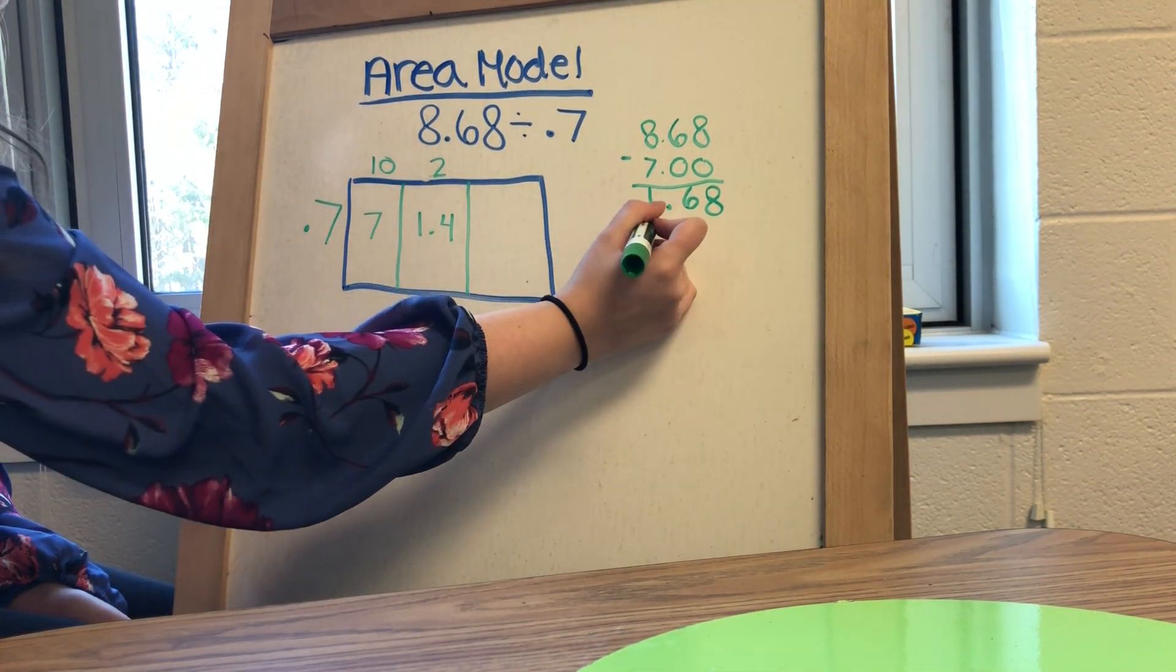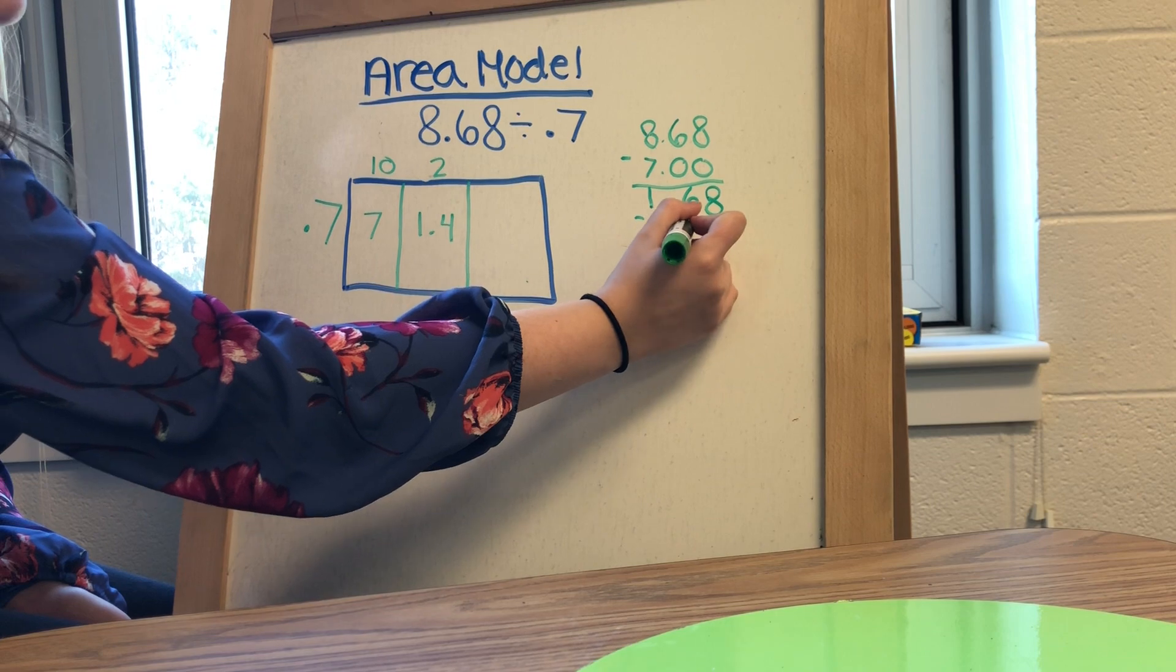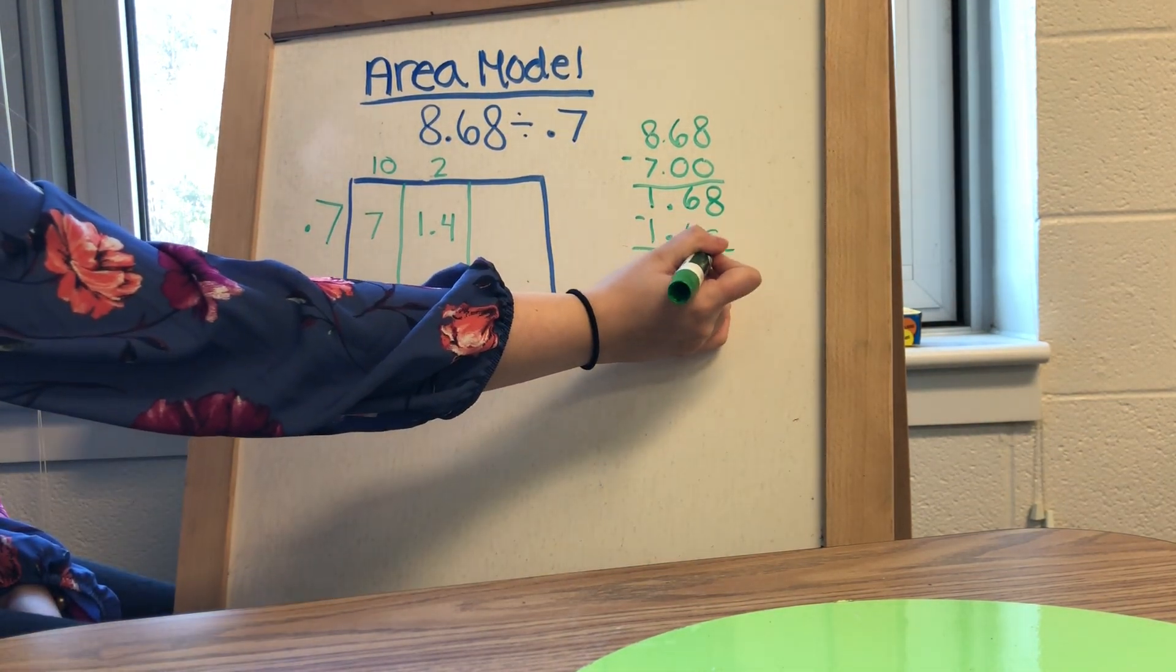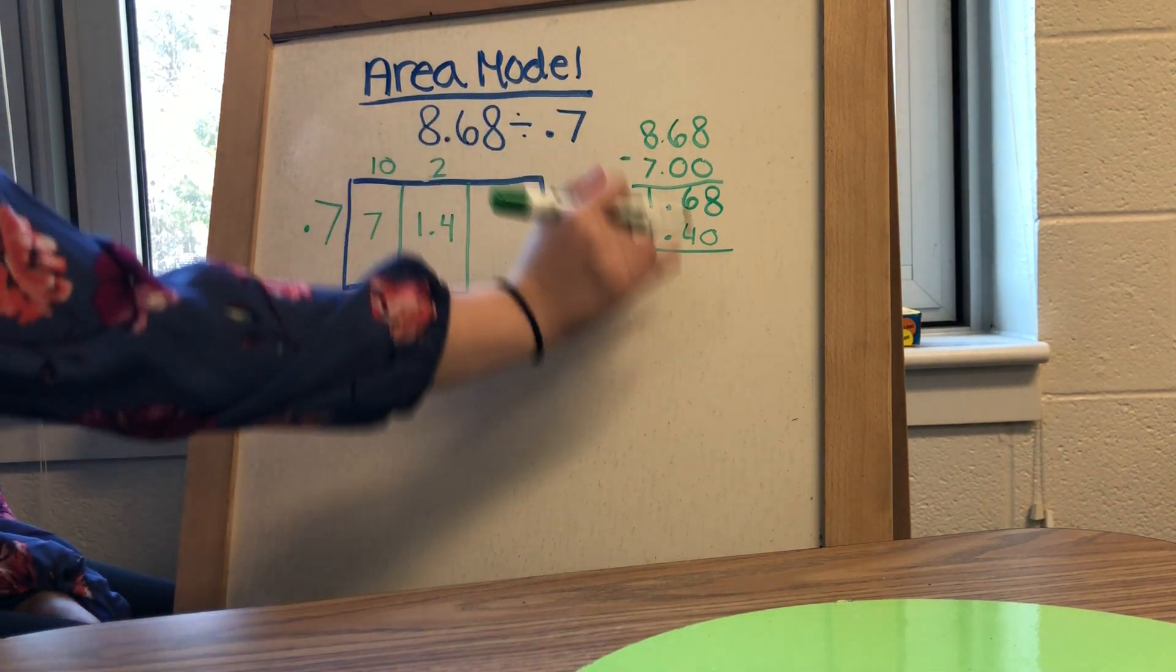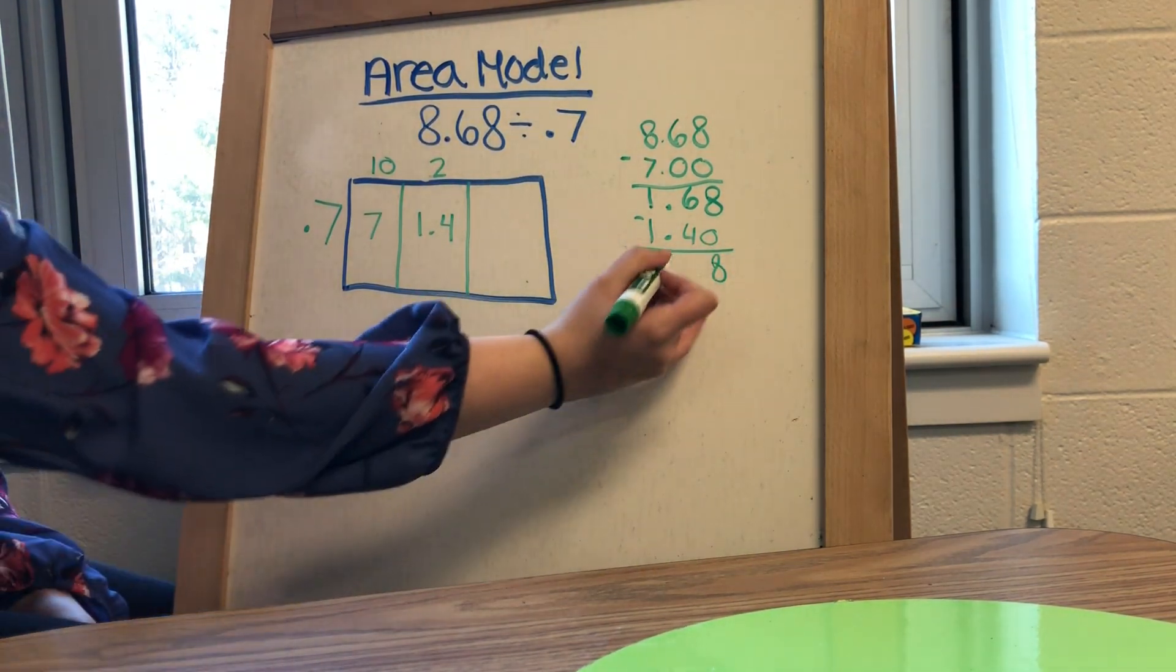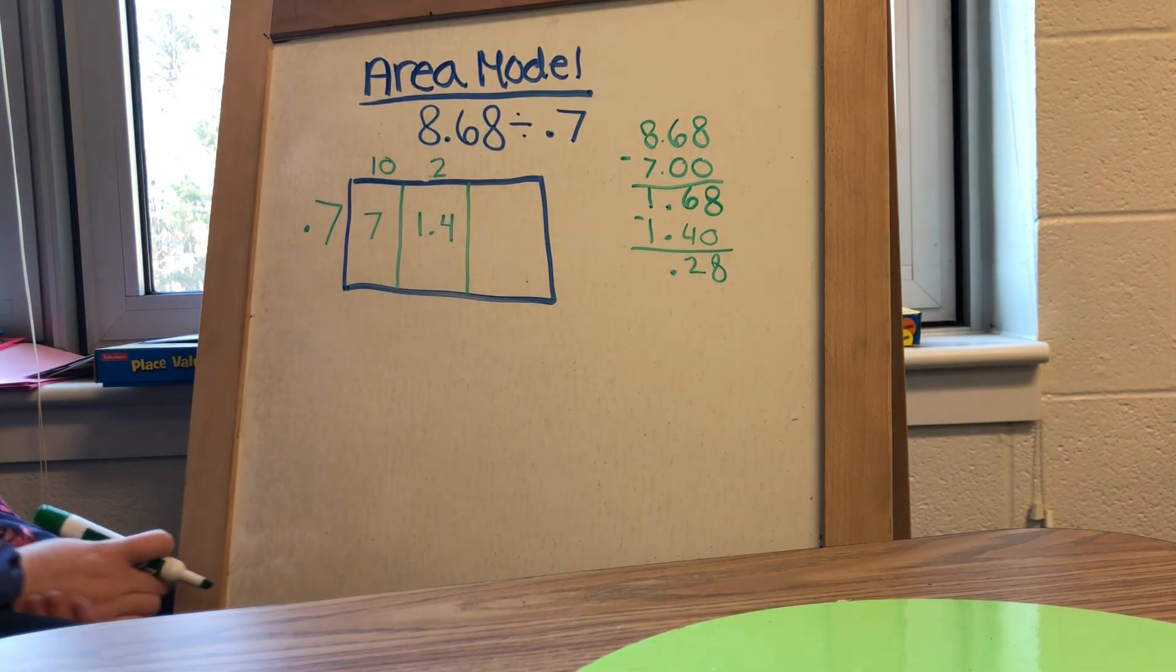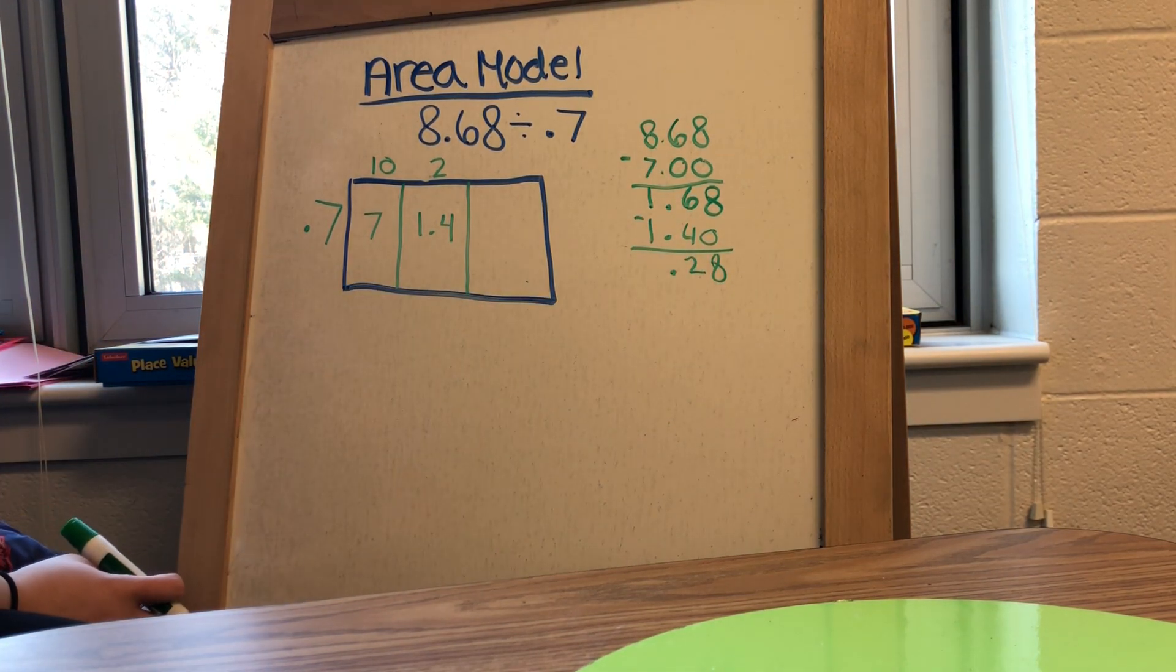So that gets me really close to this number. So I'm going to subtract out my 1 and 4 tenths. I can fill in this blank space with a 0. 8 minus 0 is 8, 6 minus 4 is 2, drop my decimal, and then 1 minus 1 is nothing. So I'm left with 28 hundredths.